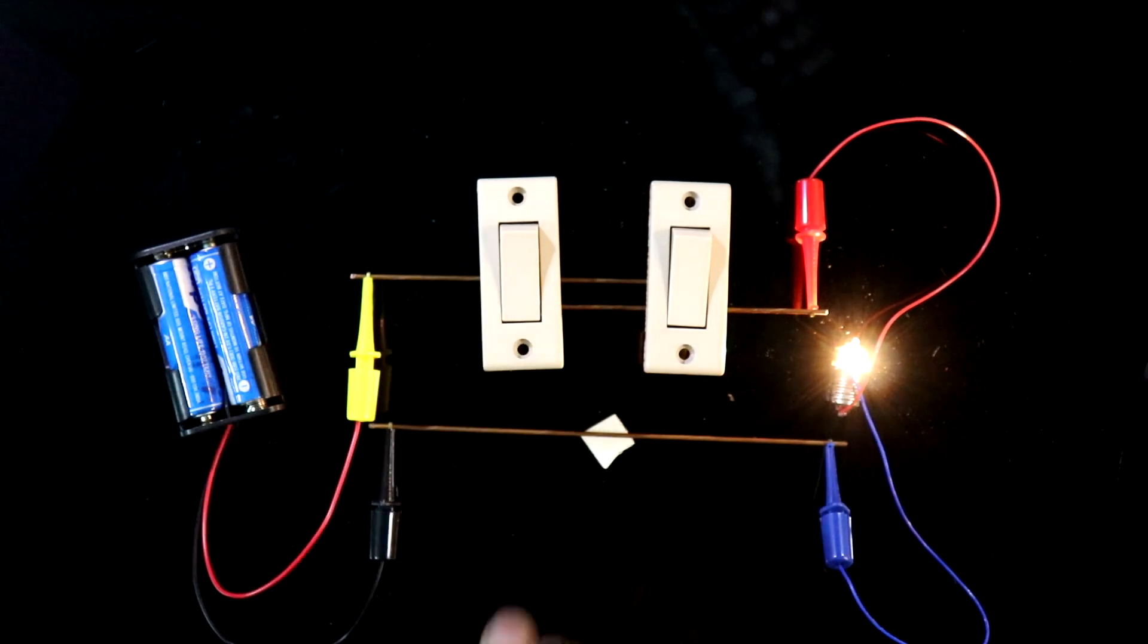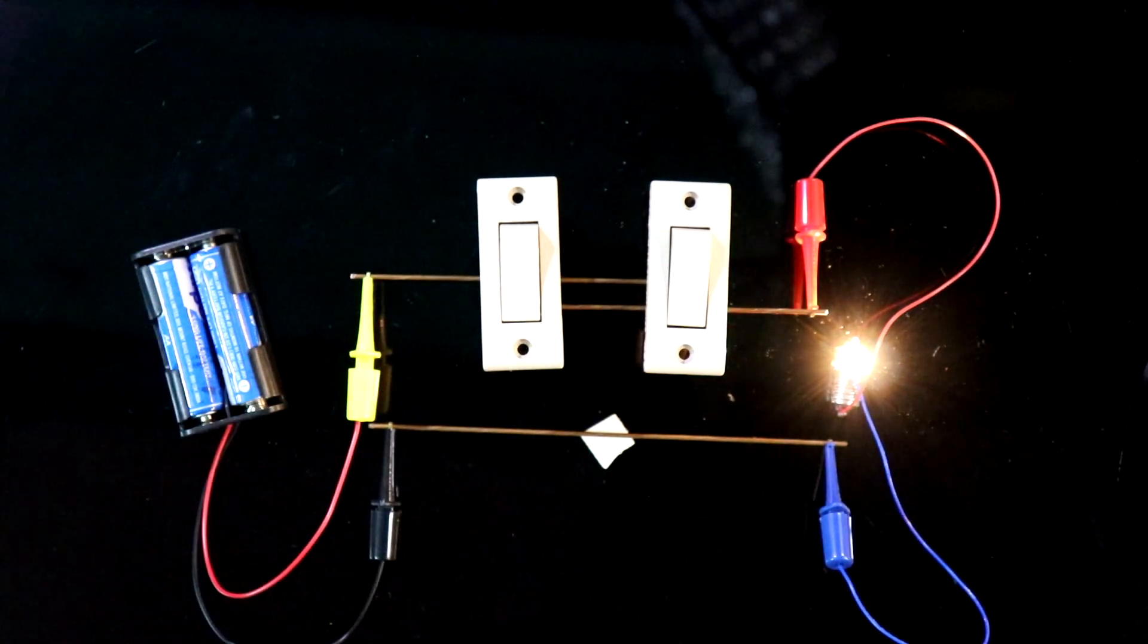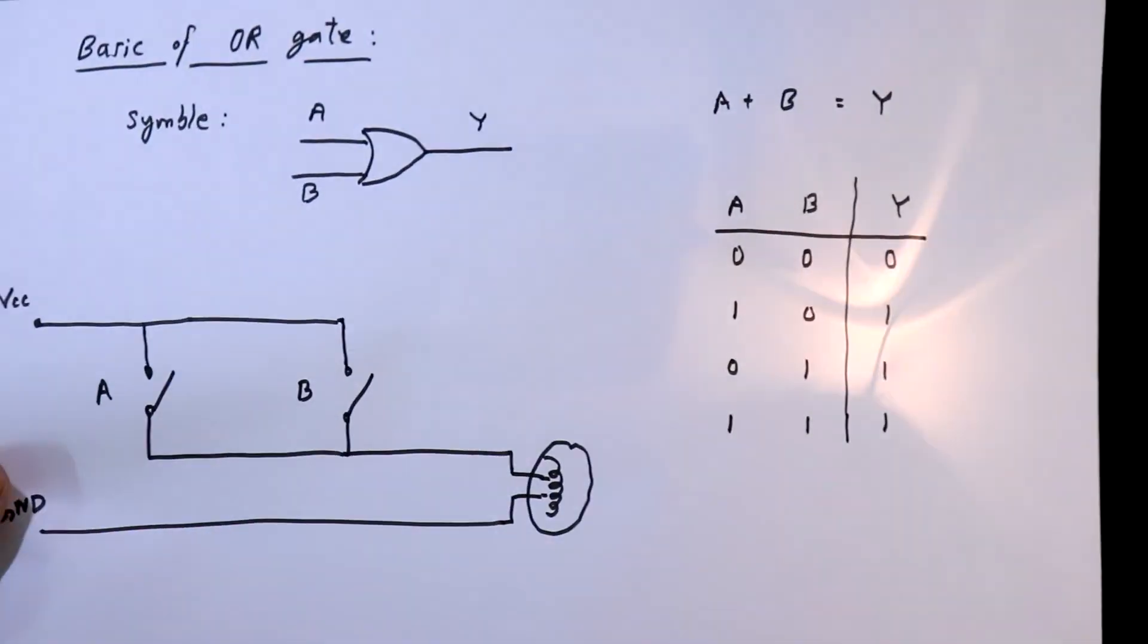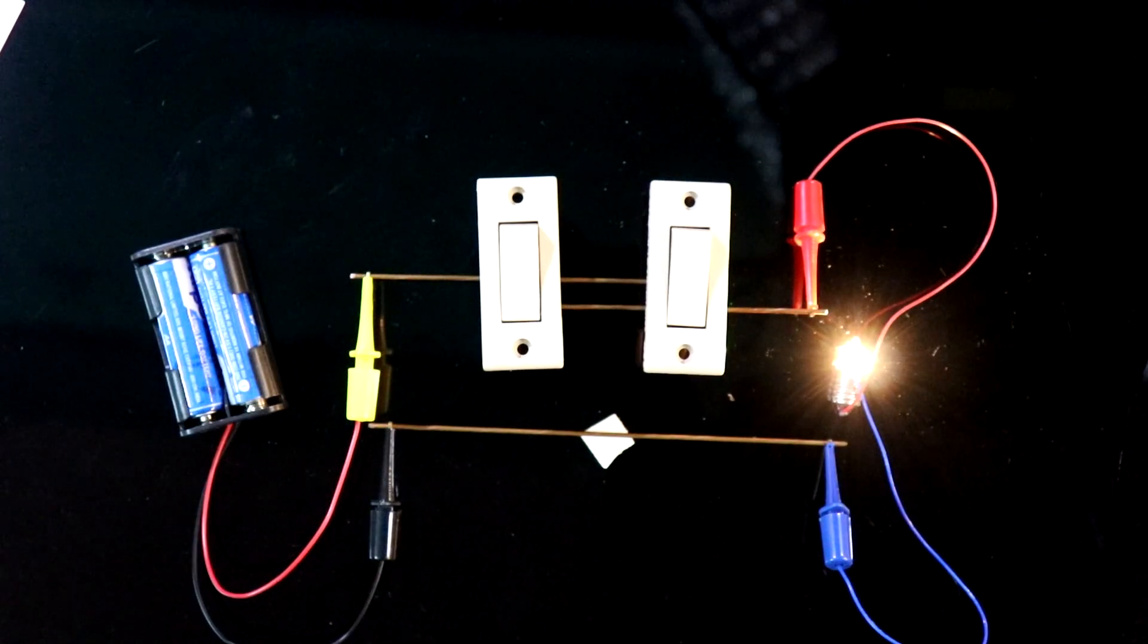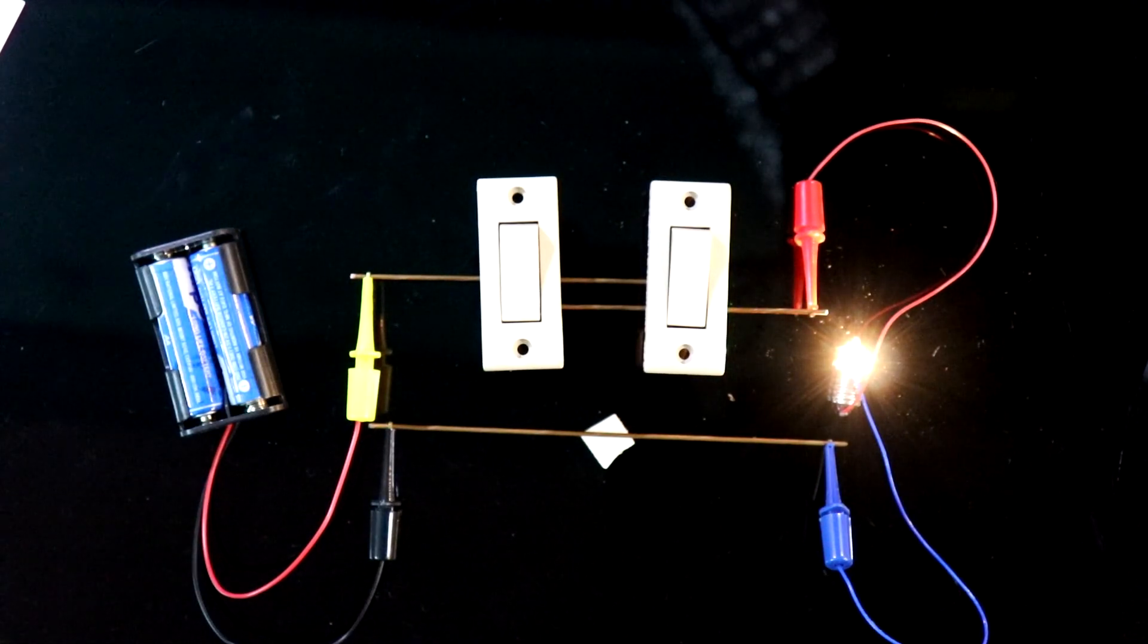And if both the switches are ON, then we are also getting the output. So this is the basics of OR gate. Thanks for watching.